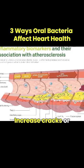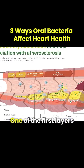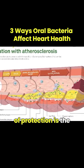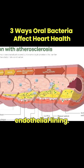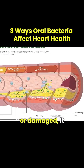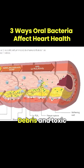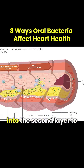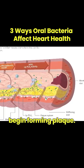The second way is increased cracks or permeability in the lining of the arterial wall. One of the first layers of protection is the endothelial lining. When unhealthy or damaged, it develops cracks. Debris and toxic particles are then allowed into the second layer to begin forming plaque.